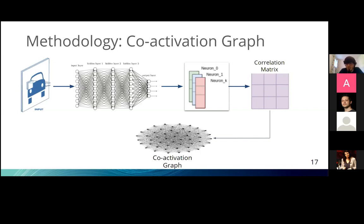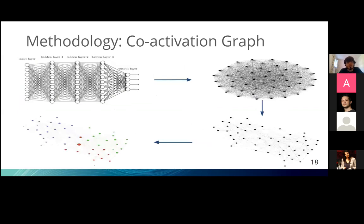Many of these correlations will be very close to zero, so we can cut them off by applying a threshold, bringing us to a more analyzable graph. By applying graph analysis on the co-activation graph after thresholding, we expect to find insightful interpretations: groups of neurons constantly activated together with certain classes, nodes that are more central than others pointing to more important neurons, and so on.